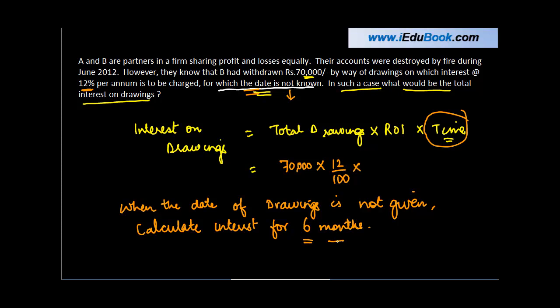Why? Because this is the average period that we assume. So, in this case, this will be into 6 divided by 12.